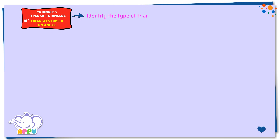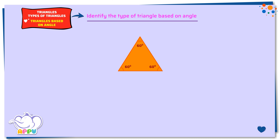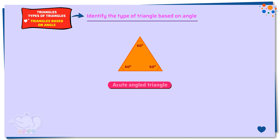Identify the type of triangle based on angle. In this triangle, we see that all the three angles are less than 90 degrees. So, this triangle is an acute angled triangle.